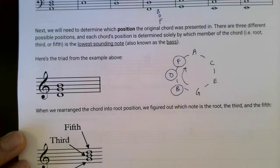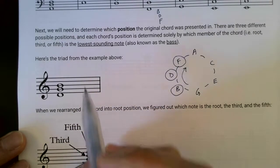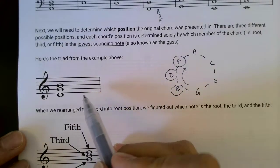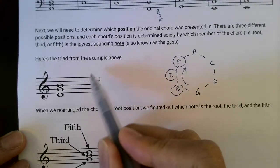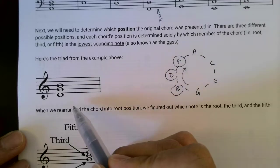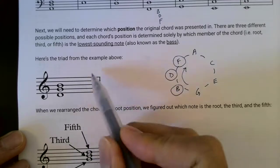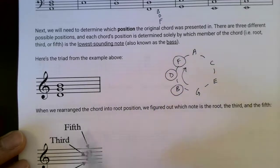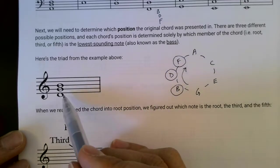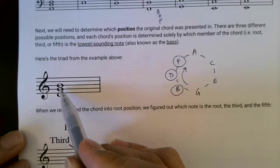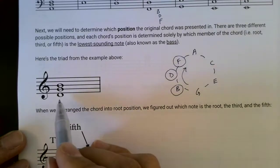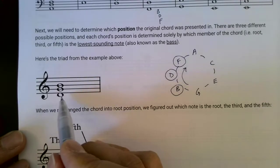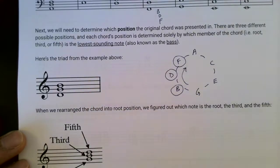Remember that in music notation, we arrange pitch from bottom to top. So anything that's below a note means it's sounding lower. In this case, the D is the lowest sounding note.